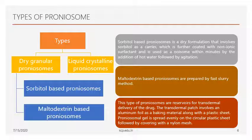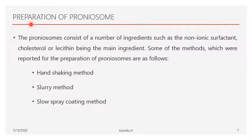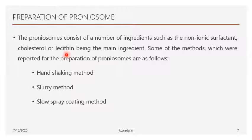Now let's see the preparation of proniosomes. There are mainly three methods: the hand shaking method, the slurry method, and the slow spray method. The major ingredients used are non-ionic surfactants and cholesterol or lecithin — either soy lecithin or similar — which are used for preparation of the proniosomes.